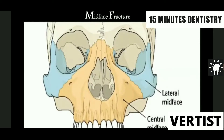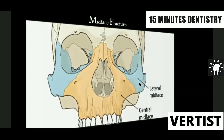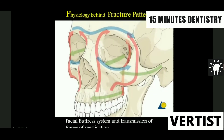These are the midface fractures. The midface has a central midface and a lateral midface. The central midface is the tooth-bearing part — that is the maxilla — and where it unites with the cranium, you have the zygoma. The zygoma is a very sturdy bone and usually doesn't get fractured itself; when it does, it fractures at the sutural part.